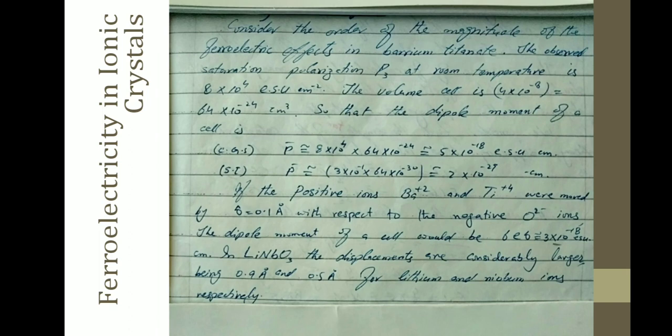Ferroelectricity in ionic crystals: consider the order of magnitude of the ferroelectric effects in barium titanate. The observed spontaneous polarization P at saturation at room temperature is 8 times 10 to the 4 esu per centimeter squared. The volume of the cell is given, and so the dipole moment of the cell can be calculated.